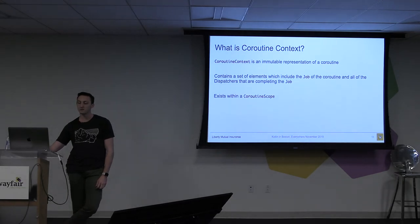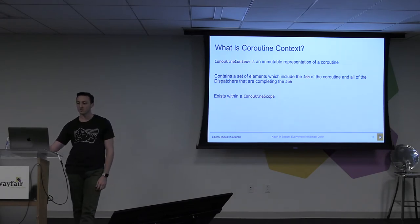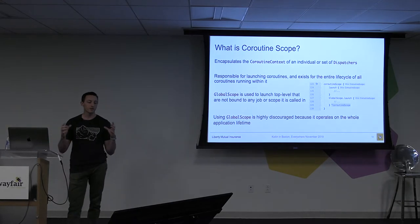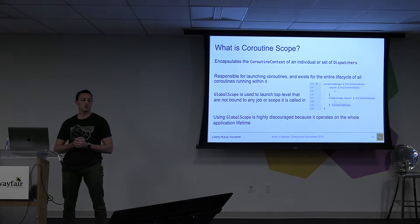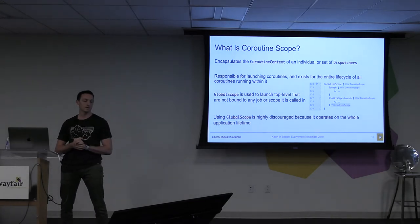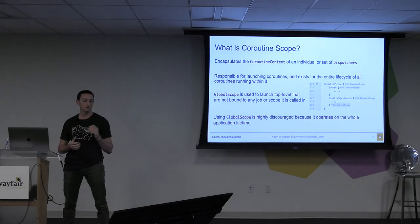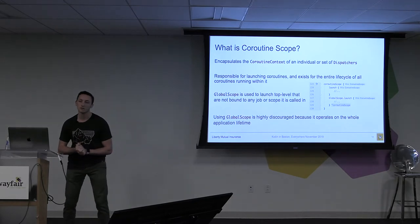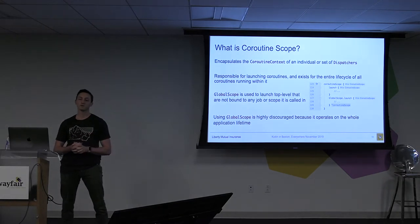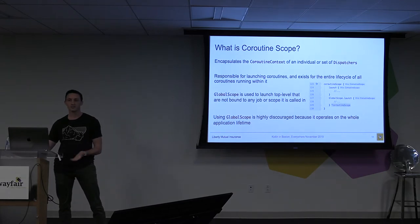The coroutine context is an immutable representation of the coroutine — it contains a set of elements including the job, and it exists within the coroutine scope. The scope encapsulates everything within it. You can see in my code that the coroutine scope is launching a builder. The top builder on line 124 would confine to the scope defined on line 123, versus the global scope line would not care about that — it would run until it completes its job regardless of whether the program terminates.